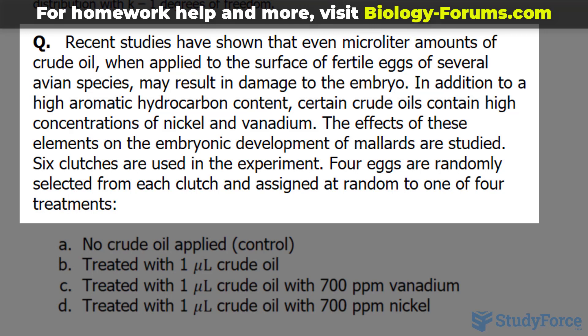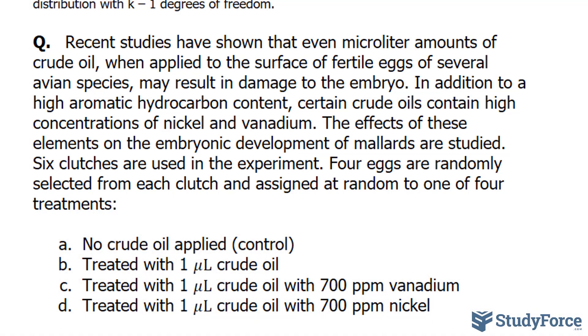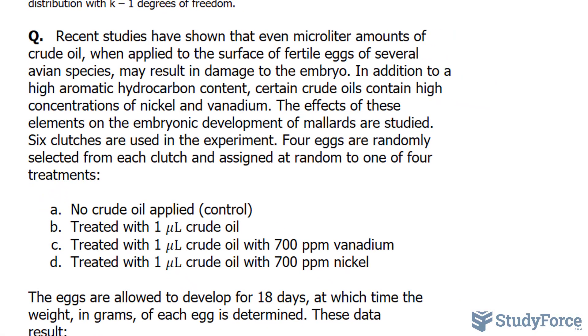The effects of these elements on the embryonic development of mallards are studied. Six clutches, or nests, are used in the experiment. Four eggs are randomly selected from each clutch and assigned at random to one of four treatments, and those treatments are shown right here.